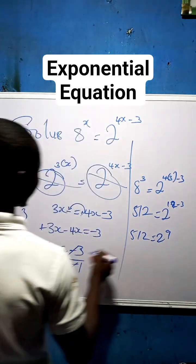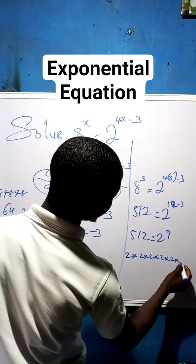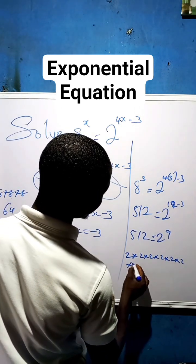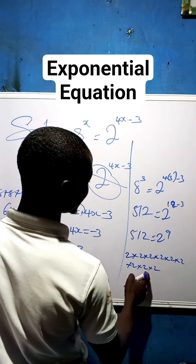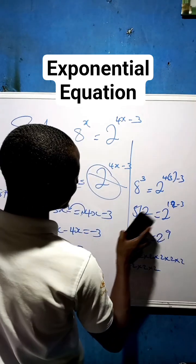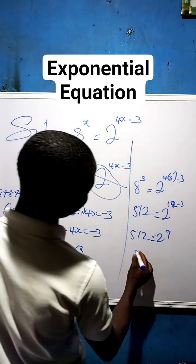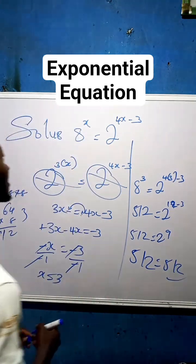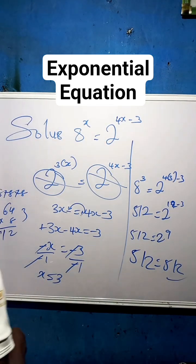You can verify: 2 times 2 times 2 repeated 9 times also gives you 512. Both sides are equal, confirming our answer is correct. You can try that and put your answer in the comment section. Thanks — if you have not subscribed to my channel, please subscribe for more videos. Thanks and God bless you.